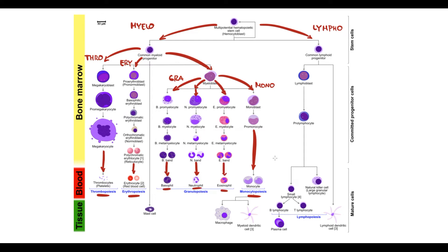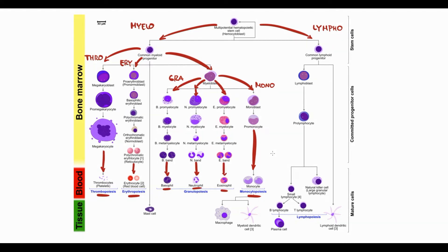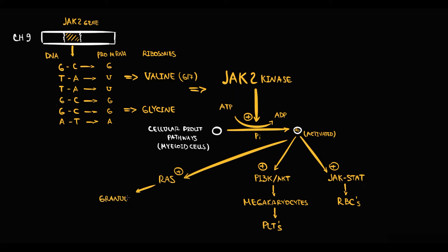Some pathways are more specific to a certain type of cell. For example, JAK2 kinase by activation of JAK-STAT pathway stimulates mostly the production of red blood cells. By activation of PI3K-AKT pathway, JAK2 kinase stimulates the production of megakaryocytes from which platelets are formed. By activation of RAS pathway, it stimulates the production of granulocytes and monocytes.